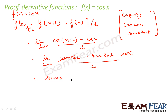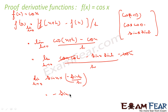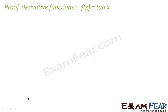We are left with limit h→0 of [−sin x·sin h / h]. Since sin h/h → 1 as h→0, this becomes −sin x · 1 = −sin x. So f'(x) = −sin x. That's the derivative of cos x, found the same way as sin x.